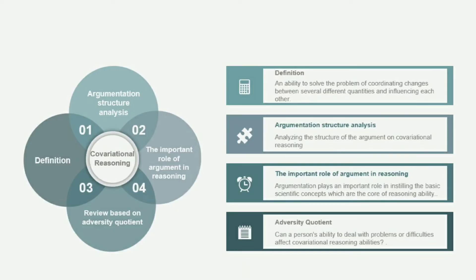Throughout these statements, the question arises about how does one argue when solving the covariation problem? Does the structure of a student's argument in solving a covariation problem affect their covariational reasoning ability? Furthermore, does it affect their ability to understand the basic concepts of calculus? This study seeks to contribute to the solution of learning function in a meaningful way by using a covariational approach for undergraduate students through argumentative analysis. This research is qualitative. Analysis of the structure of a student's argumentation on covariational reasoning was carried out after determining their level of adversity quotient.